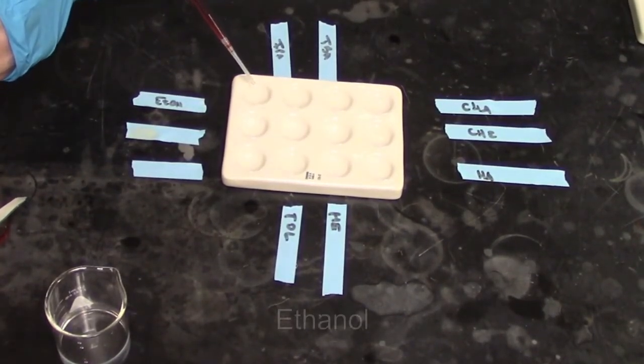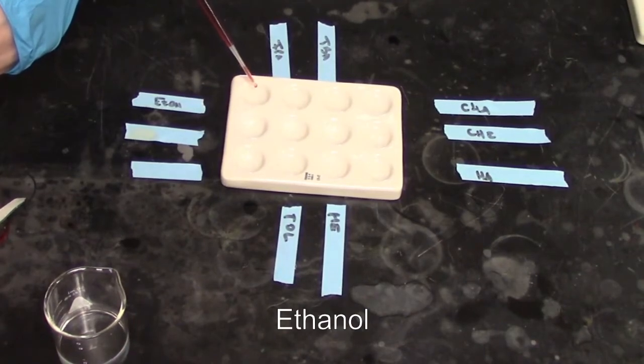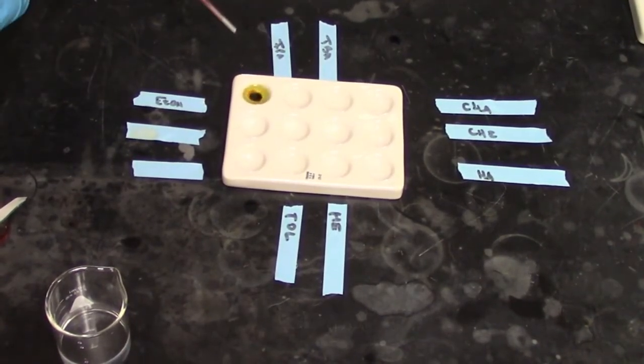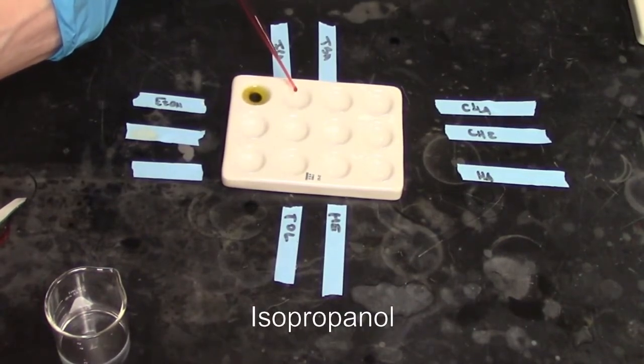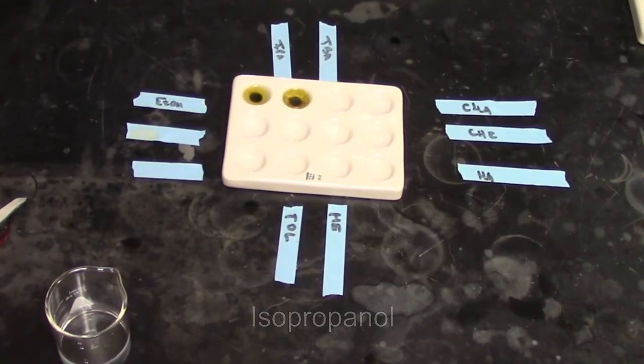So if we look at ethanol, doesn't take much. We add a drop and we see the shift to a green color from the orange. Isopropanol, same shift.